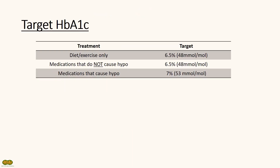Target HbA1c should be 48 mmol per mole or 6.5% and lower, if patients are only managing diabetes with diet and exercise or with medications that do not cause hypoglycemia. If patients are on drugs that do cause hypoglycemia, aim for a target HbA1c of 53 mmol per mole or 7%.